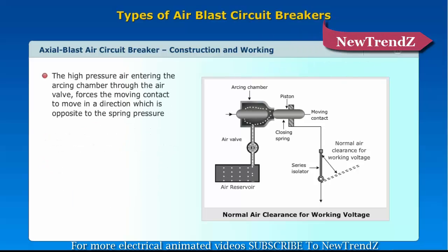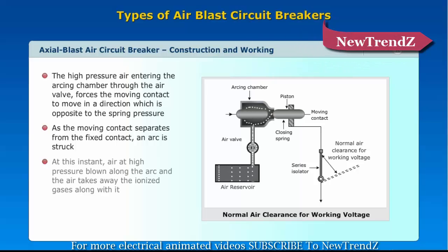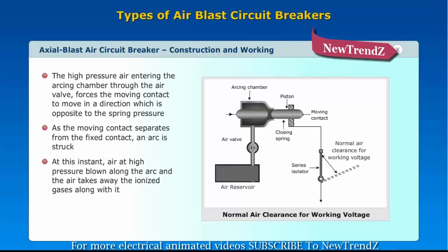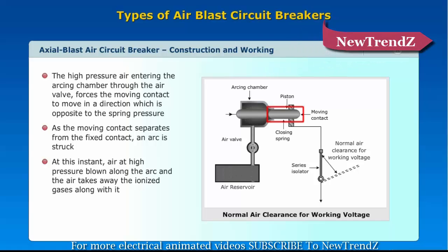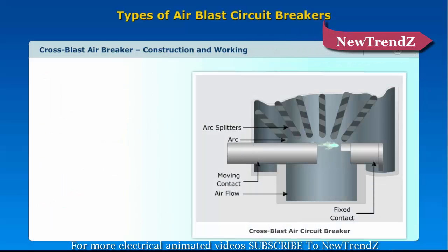The high pressure air entering the arcing chamber through the air valve forces the moving contact to move in a direction opposite to the spring pressure. As the moving contact separates from the fixed contact, an arc is struck. At this instant, air at high pressure is blown along the arc, and the air takes away the ionized gases along with it. Consequently, the arc extinguishes and current ceases to flow.